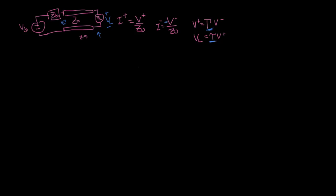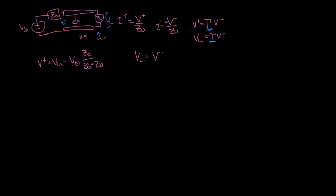Let's dive in and see what happens when the voltage gets to the other side. There's going to be a V plus, a forward propagating voltage equal to the initial input voltage — the voltage divider between the source impedance and Z naught. When we get to the load side, we apply conservation of energy. The load voltage is going to be a combination of the wave coming in and the wave that's reflected, since those are the only two voltages present, and they add together to form the total voltage.